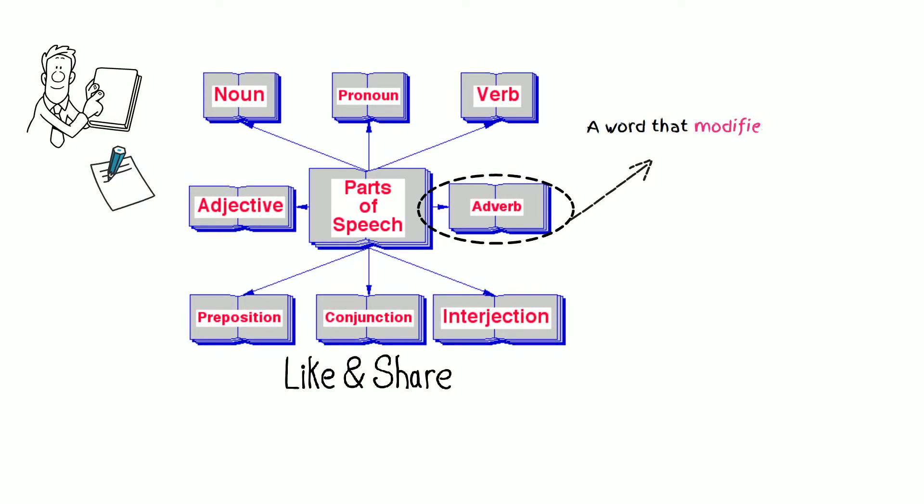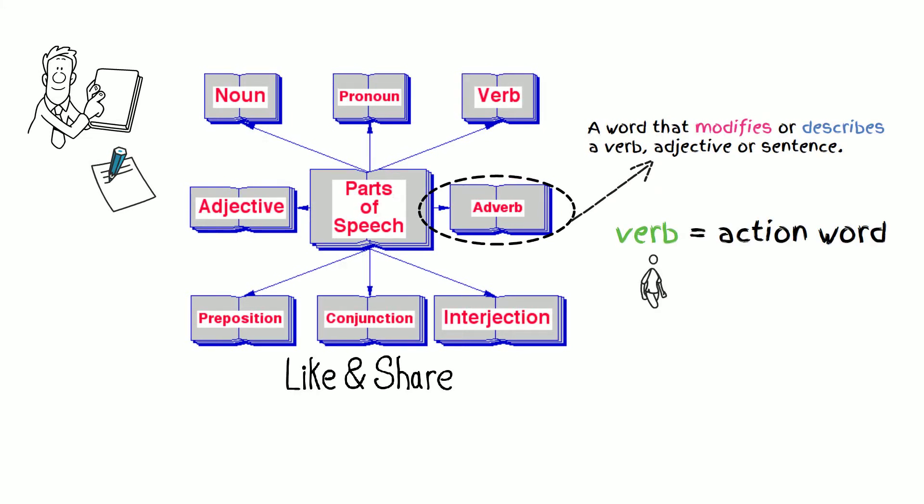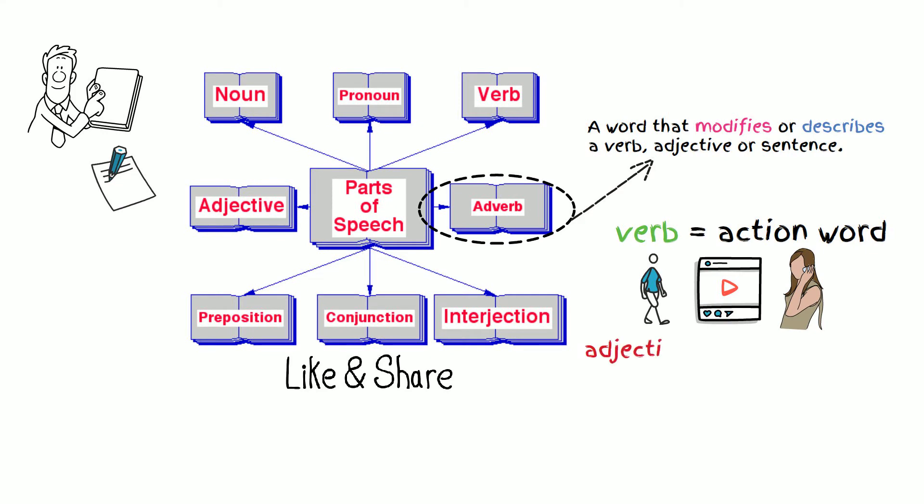An adverb is a word that modifies or describes a verb, adjective, or sentence. Let's review what a verb is. A verb is an action word such as walk, watch, or talk. An adjective is a describing word.